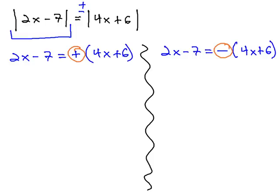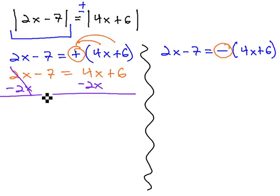We can start by distributing the sign through. Distributing a positive doesn't change much: 4x plus 6. We now need the variable on one side, so we'll subtract 2x from both, giving us negative 7 equals 2x plus 6.